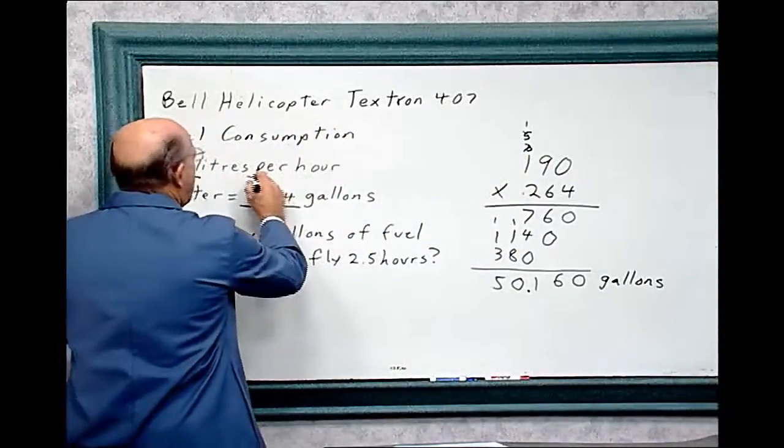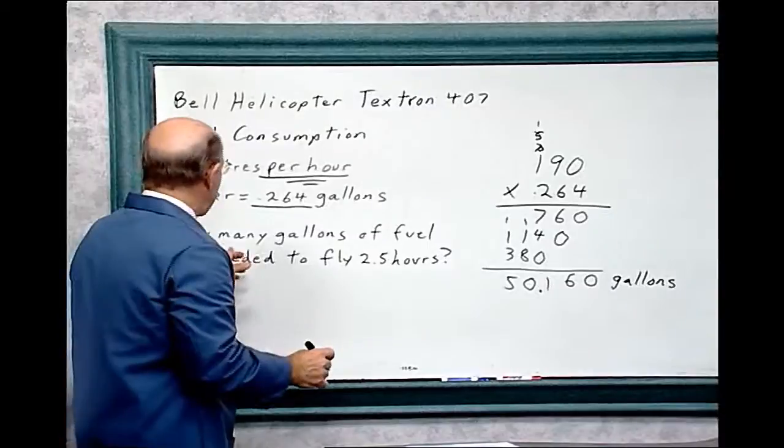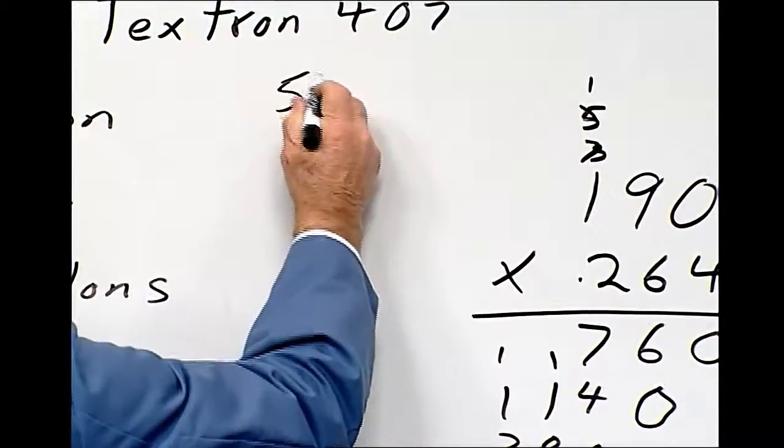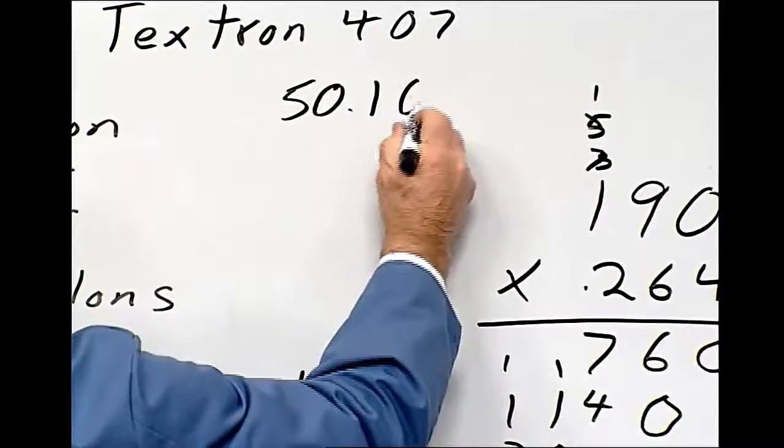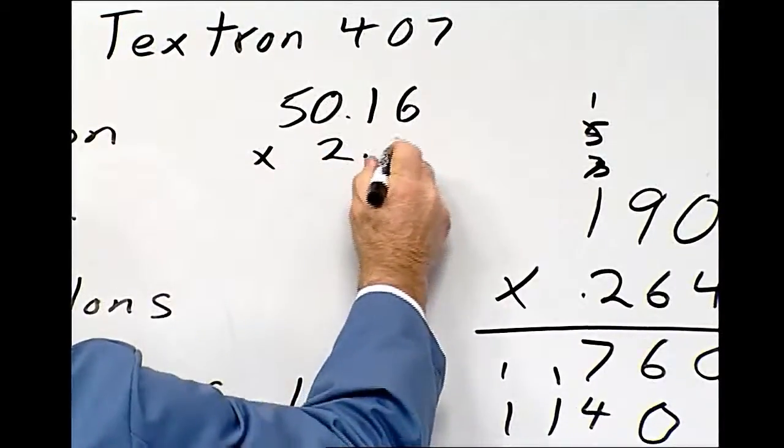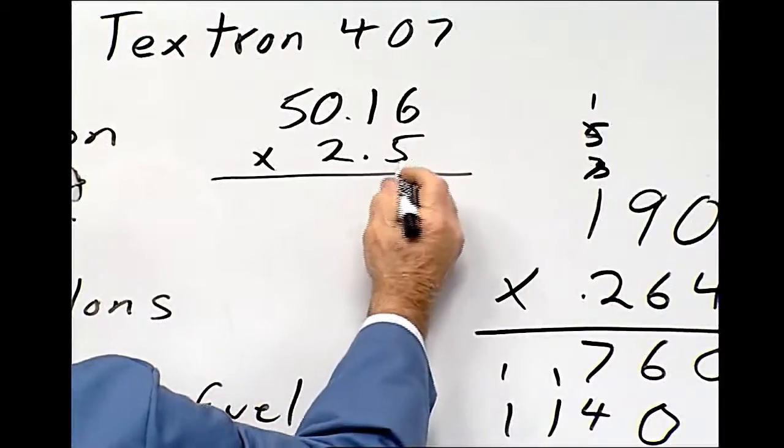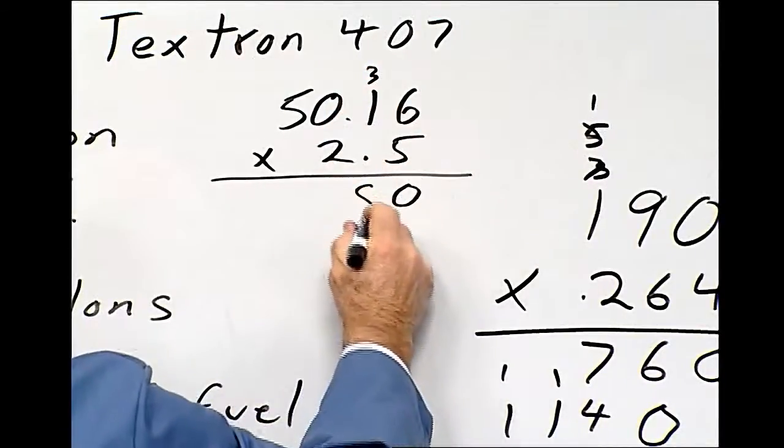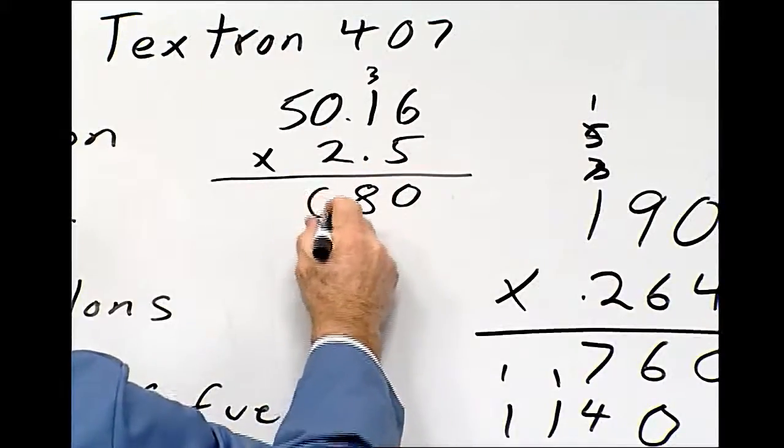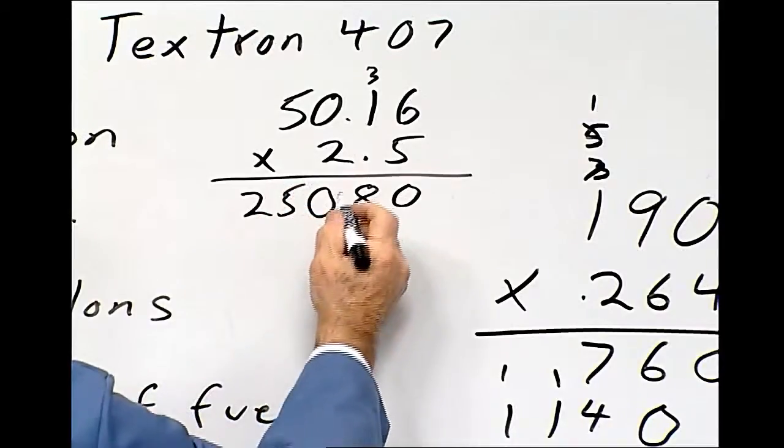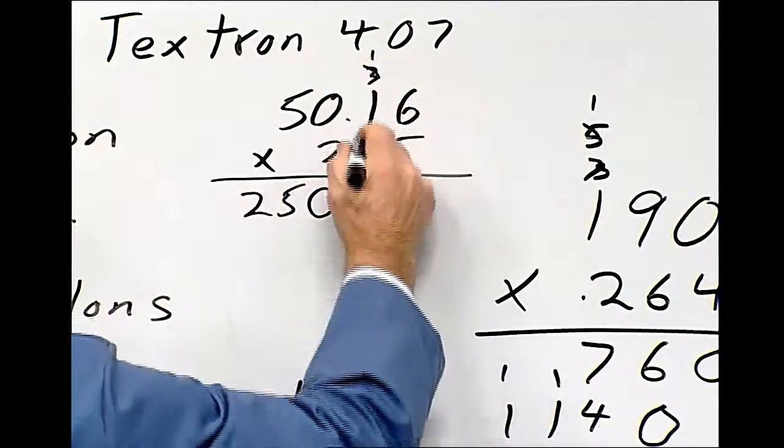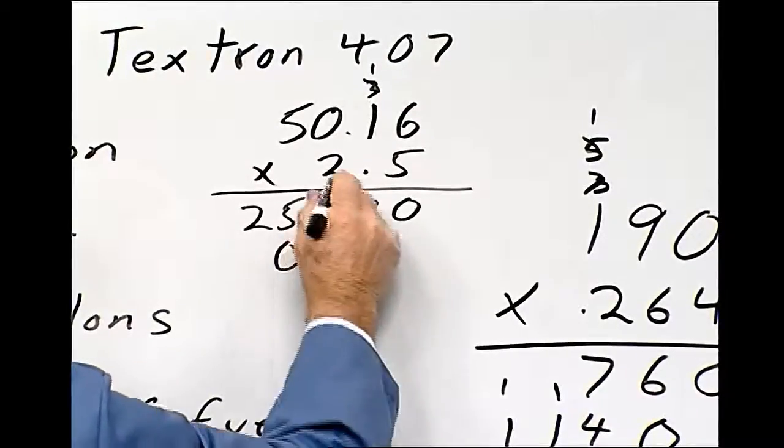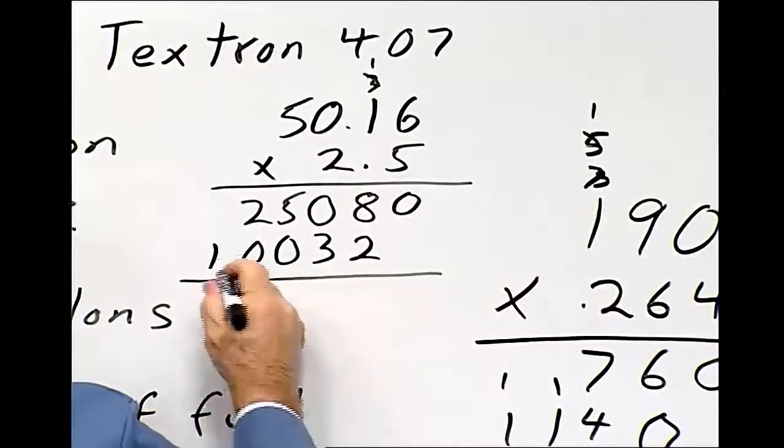But that's in one hour. So the question is how many gallons of fuel is needed to fly two and a half hours. We've got to take 50.16 times 2.5. Let's do the math. Five times six is 30. Carry three. Five times one is five plus three is eight. Five times zero is zero. Five times five is 25. Two times six is 12. Two times one is two plus one is three. Two times zero is zero. Two times five is 10.